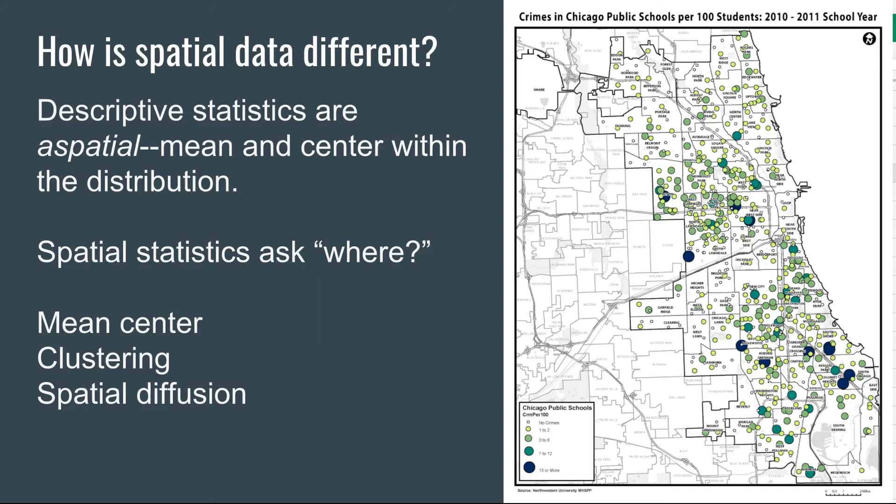Last slide here, we can talk about how spatial data is different. Descriptive statistics just deal with the numbers. There are descriptive spatial statistics that ask basically where. Where do things happen? We've got the mean center, clustering, spatial diffusion, things like this. We can say what's the mean center of population in the United States? Where's the average location of where people live? That's something that's changed over time. We can say where are hot spots and cold spots for disease or for poverty. There's also measures of spatial diffusion. Think about a virus spreading over space, and we can do spatial statistics to understand how quickly things spread over space as well.